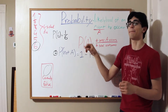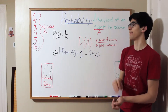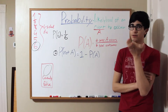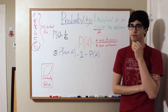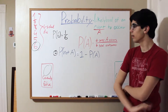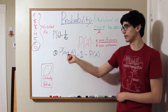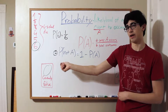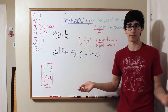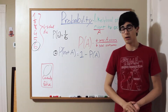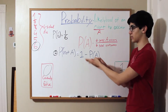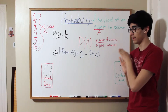If P(A) means the probability of event A happening — that's the general notation for an event — then the probability of not A is the probability of that event not happening. We're just counting how many ways that doesn't happen. This is calculated as 1 minus the probability of A.